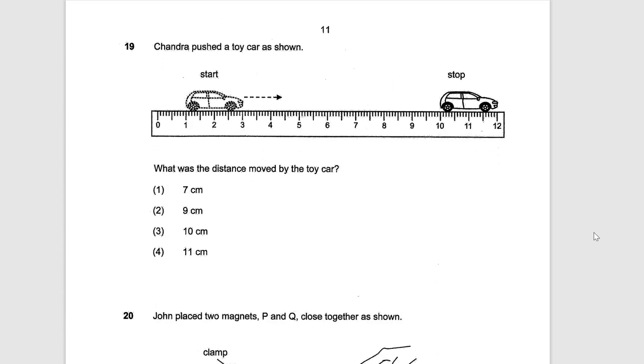Question number 19. Chandra pushed a toy car as shown. What was the distance moved? Now there are 2 ways to do this question. You either see the distance moved from the front of the car or the back of the car. Do not count from front to the back. So let's see. What is this distance right in front here? This is 3. And here it is 12. So 12 minus 3 equals to 9. Answer's number 2.